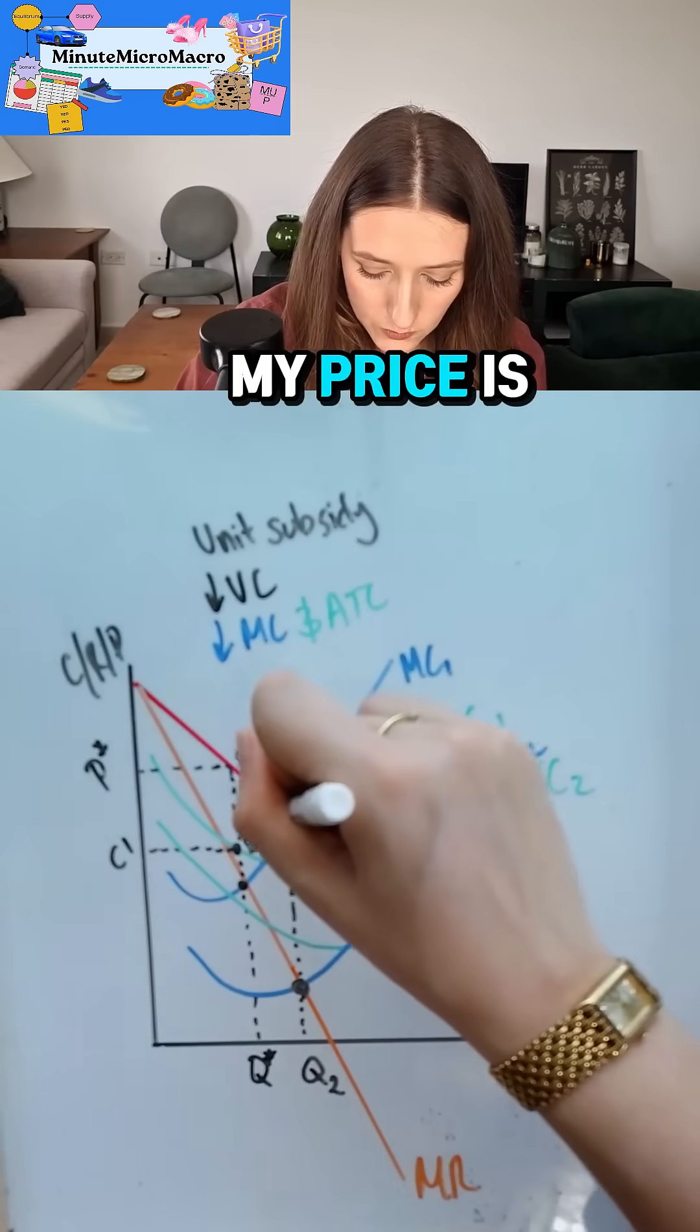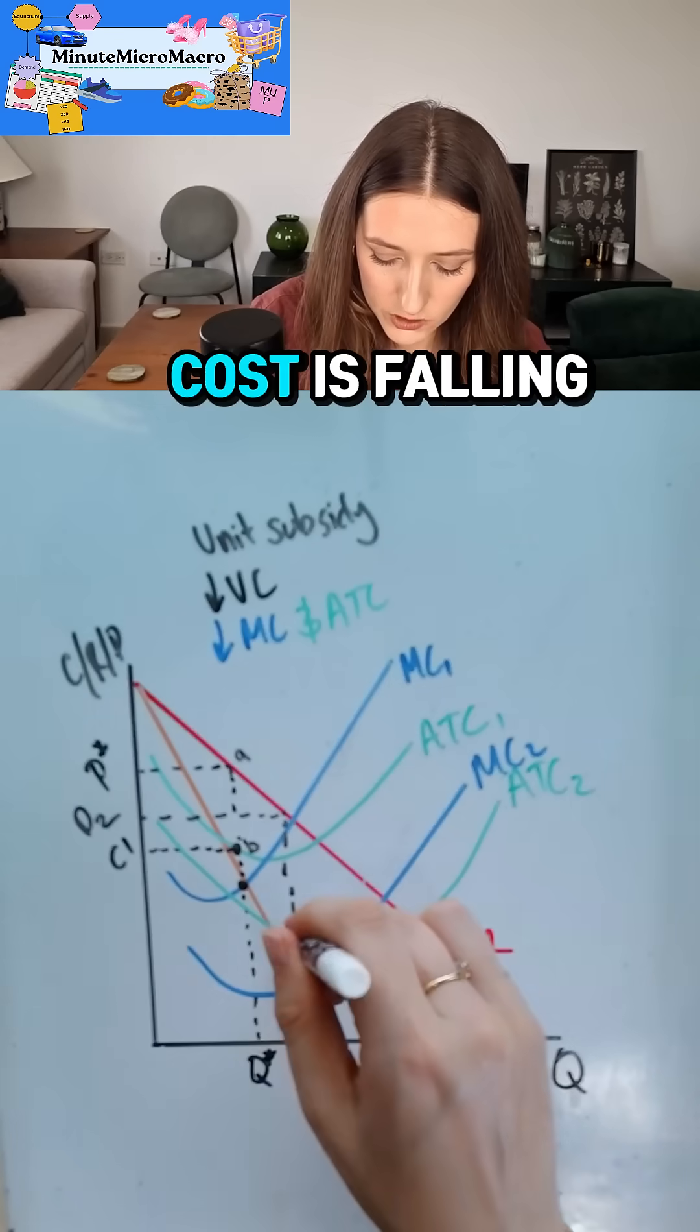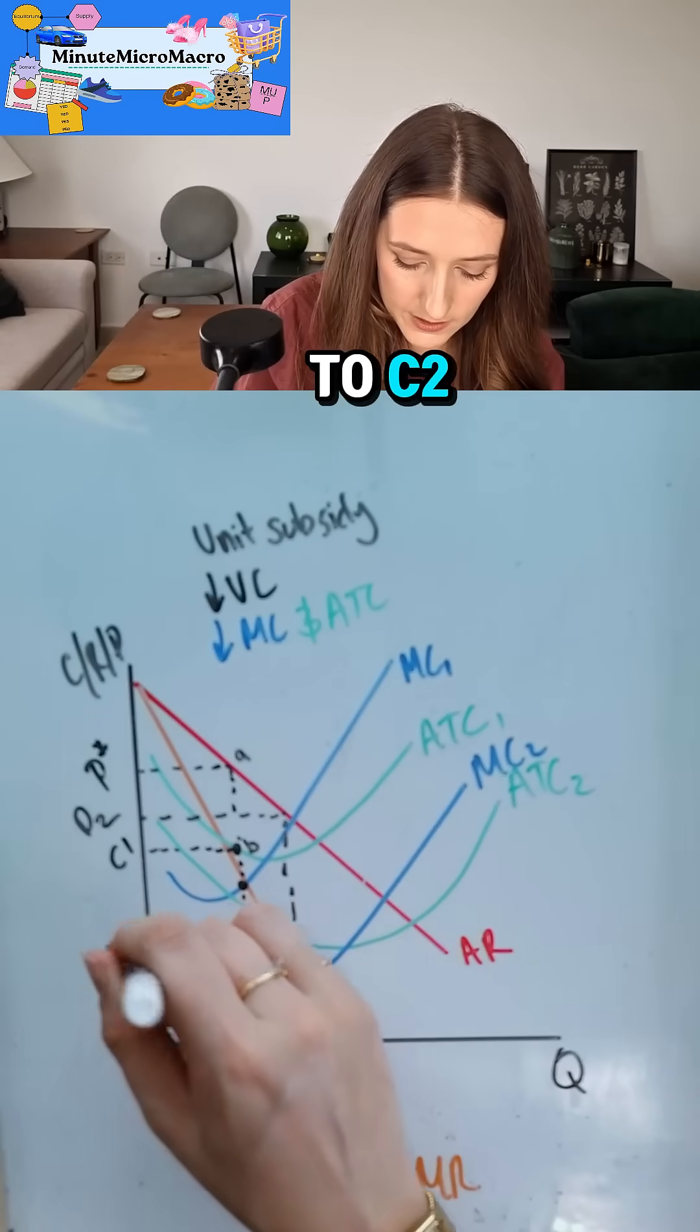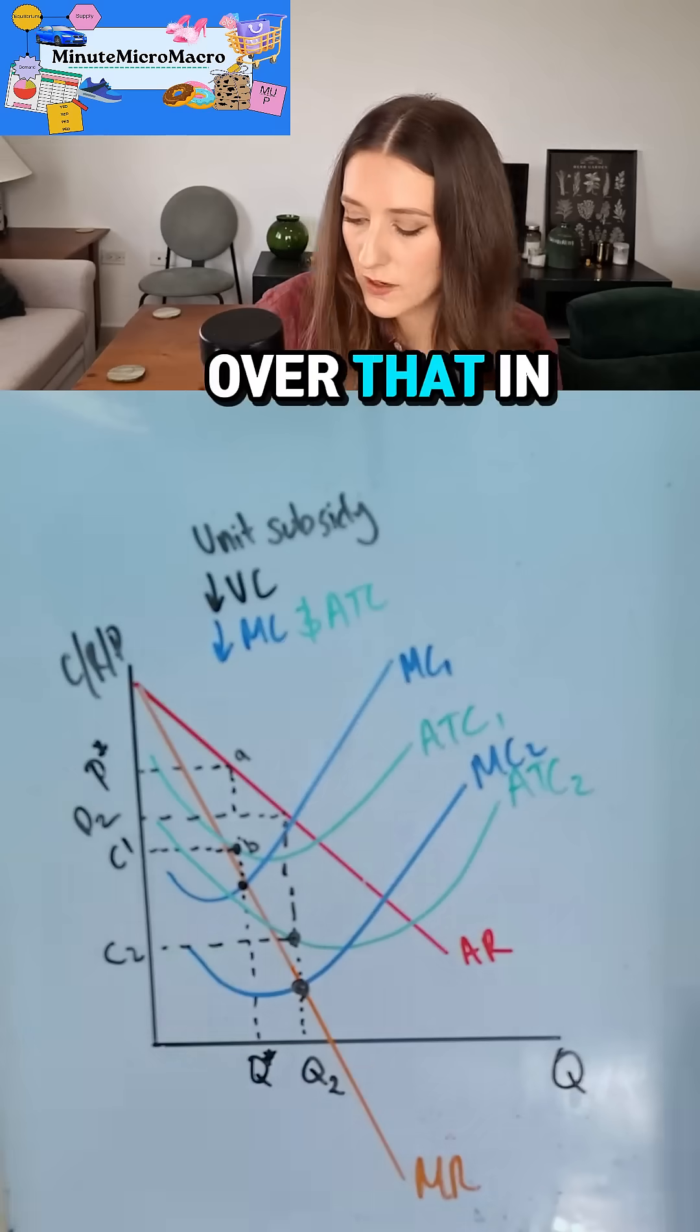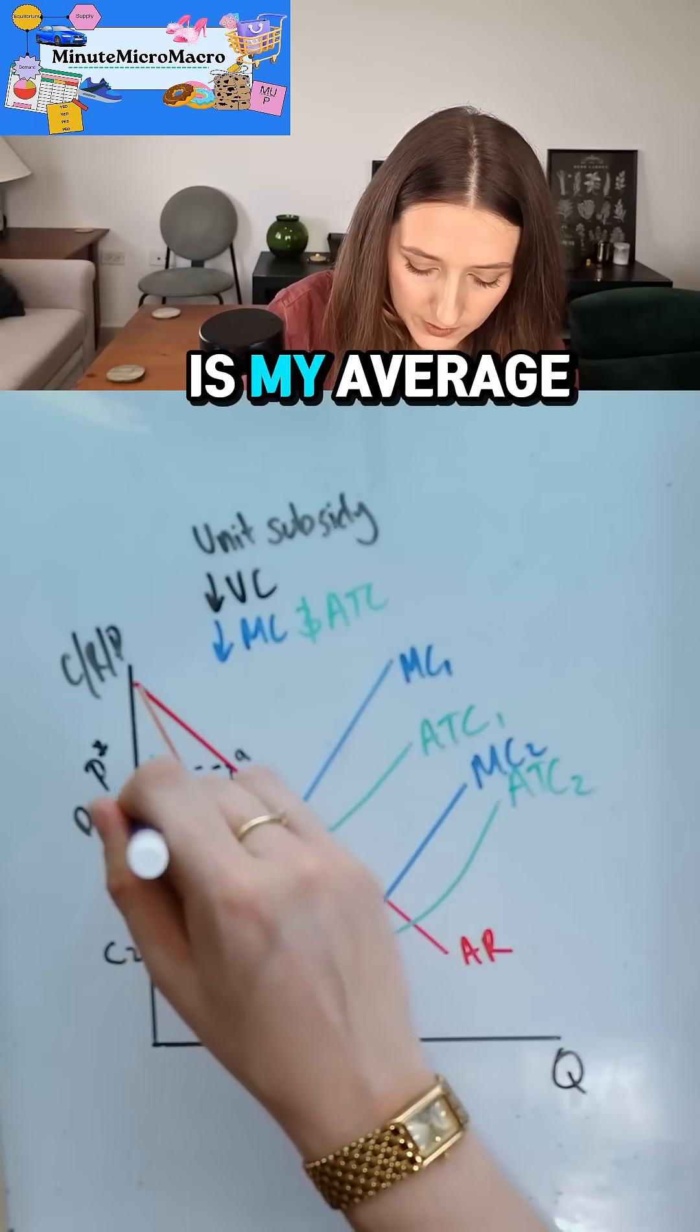Now the point where MC equals MR is up here. I'm going to call this Q2. At that quantity, my price is going to fall to P2 and my average cost is falling to C2. I'm going to draw over that in purple to make it clear.